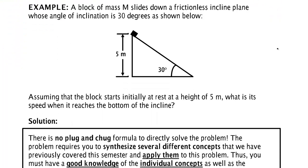Here's an example problem. You have a block of mass M sliding down a frictionless inclined plane whose angle of inclination is 30 degrees. Important things to note is it's a frictionless inclined plane. It has an angle of inclination, it's 30 degrees. We're going to assume the block starts initially at rest. It's at a height of five meters. We're going to want to know how fast it's going when it gets right down to here.